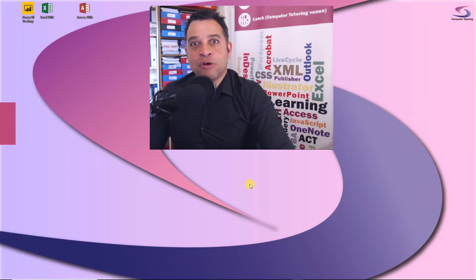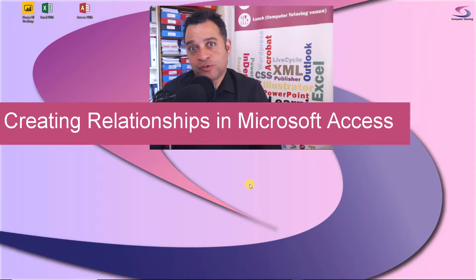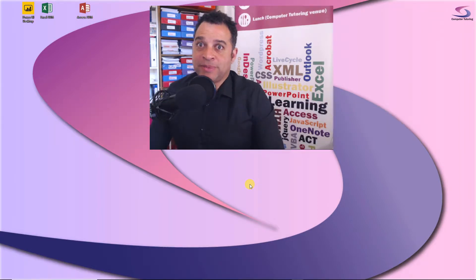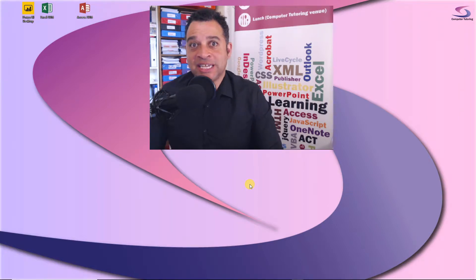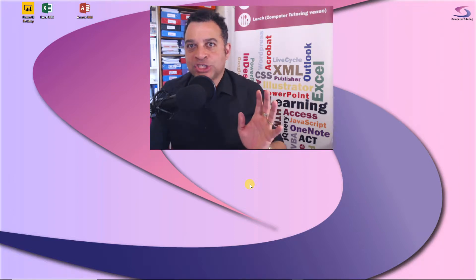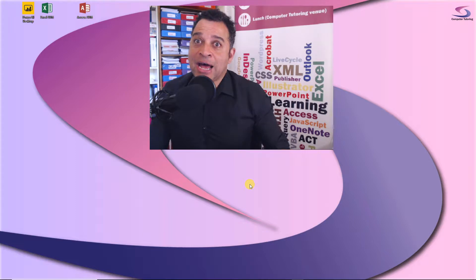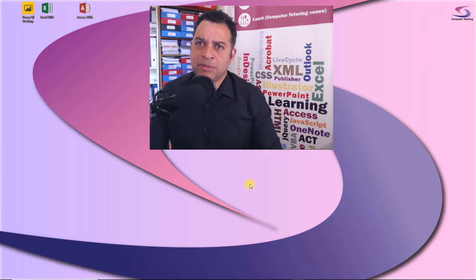We're going to look at creating relationships in Microsoft Access. If you need to define a relationship in MS Access 2016, or think about planning a database, you need to think about what information you want to record and how the tables you create are going to relate. We're going to look at a one-to-many relationship and discuss primary keys and foreign keys, and how you'd use them to create a customer database to record customer orders.